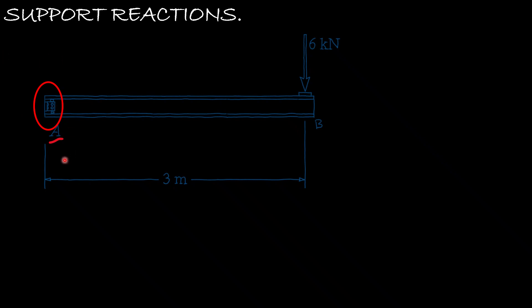At A, we have a fixed beam support. At a fixed beam support, we have three reaction forces. The fixed support restrains or prevents movement in the horizontal direction, vertical direction, and rotation. When a degree of freedom is restrained, we will have a corresponding reactive force or couple at that support location.